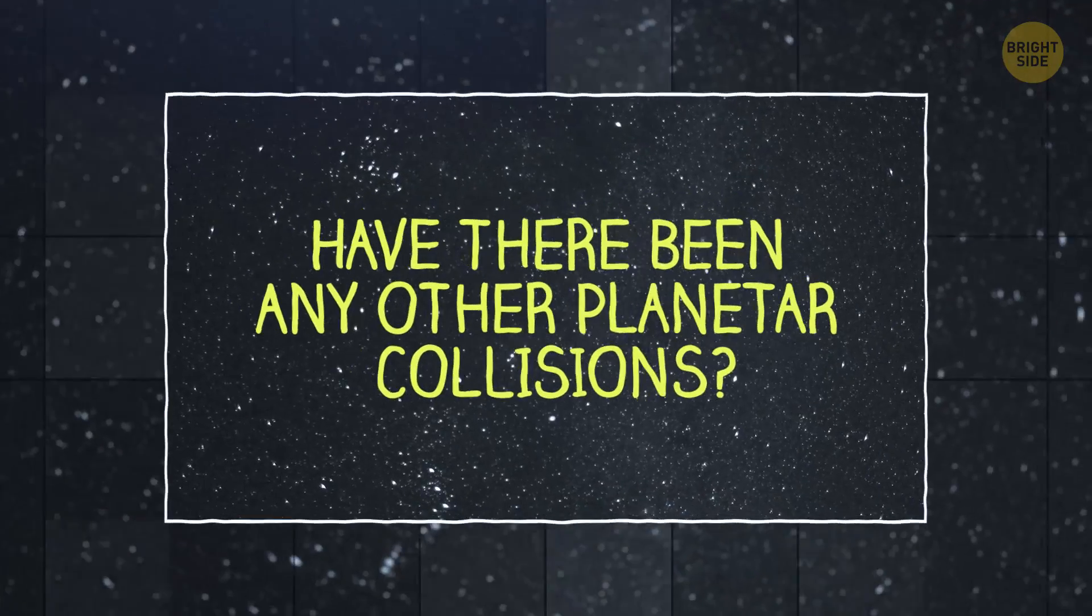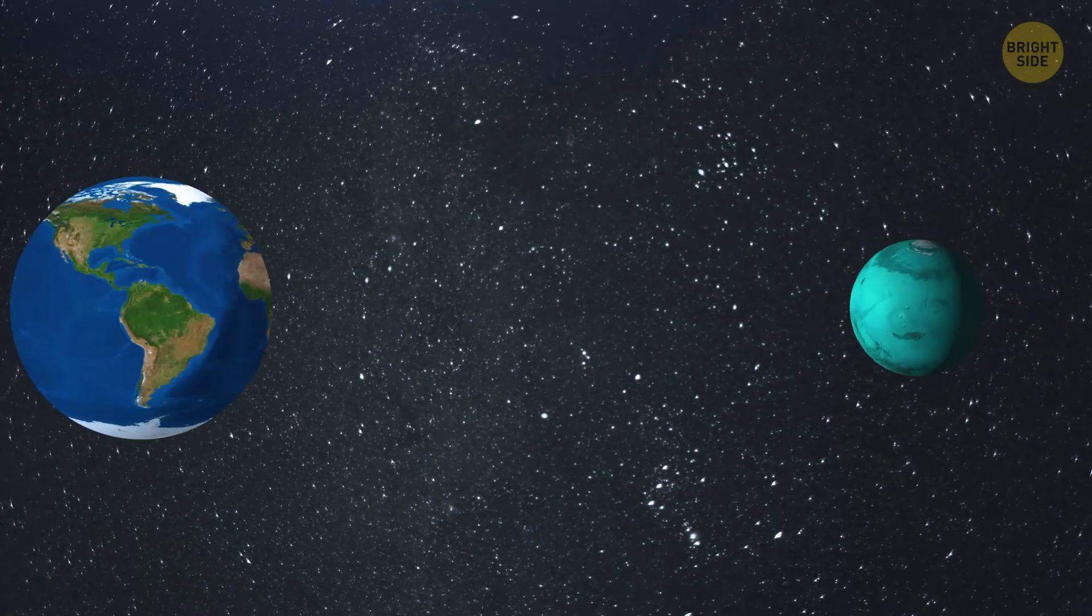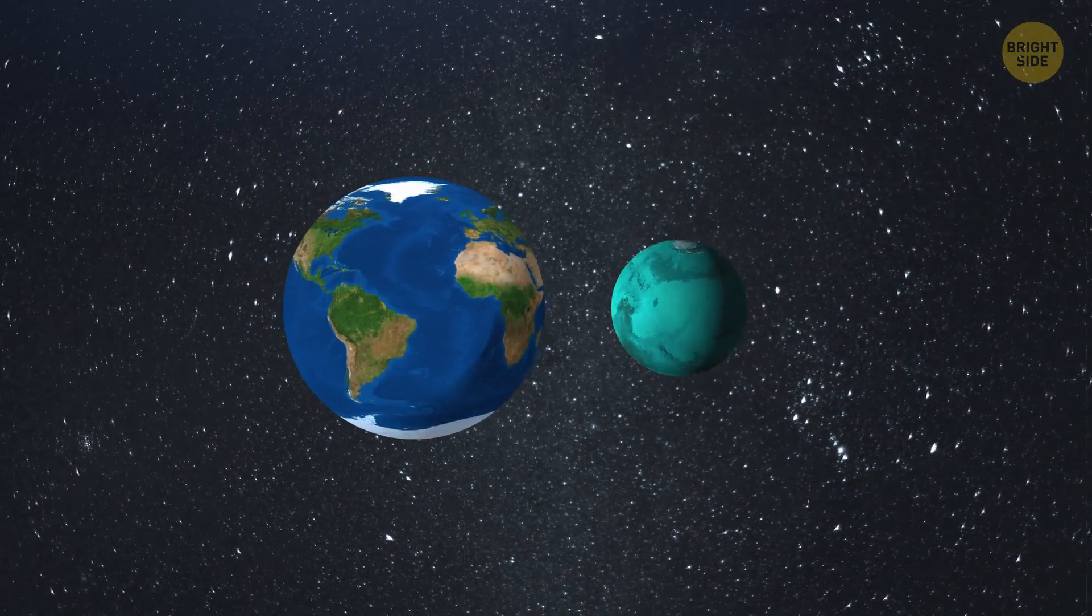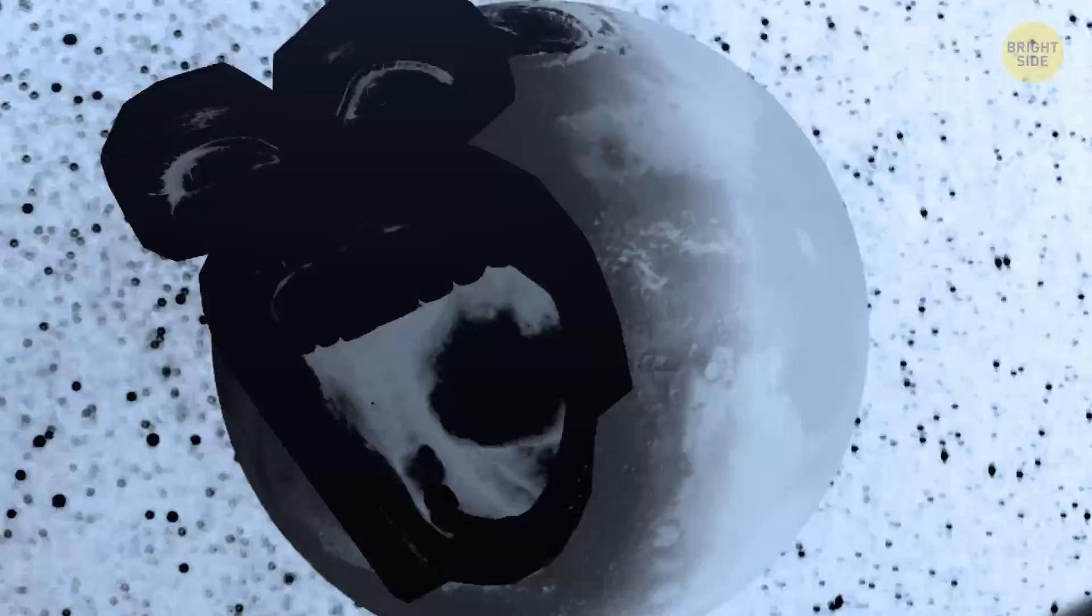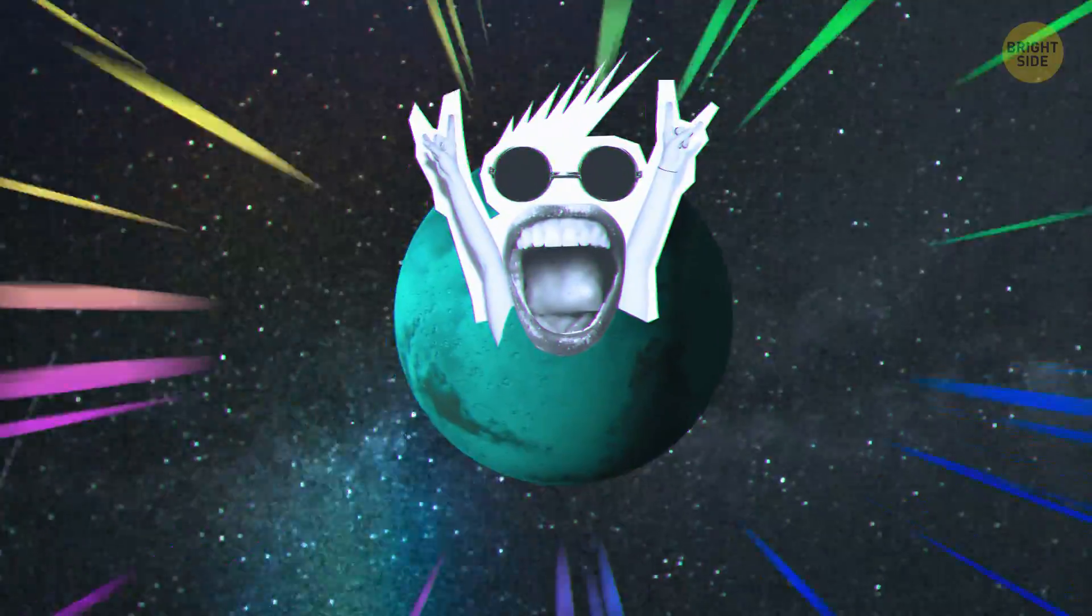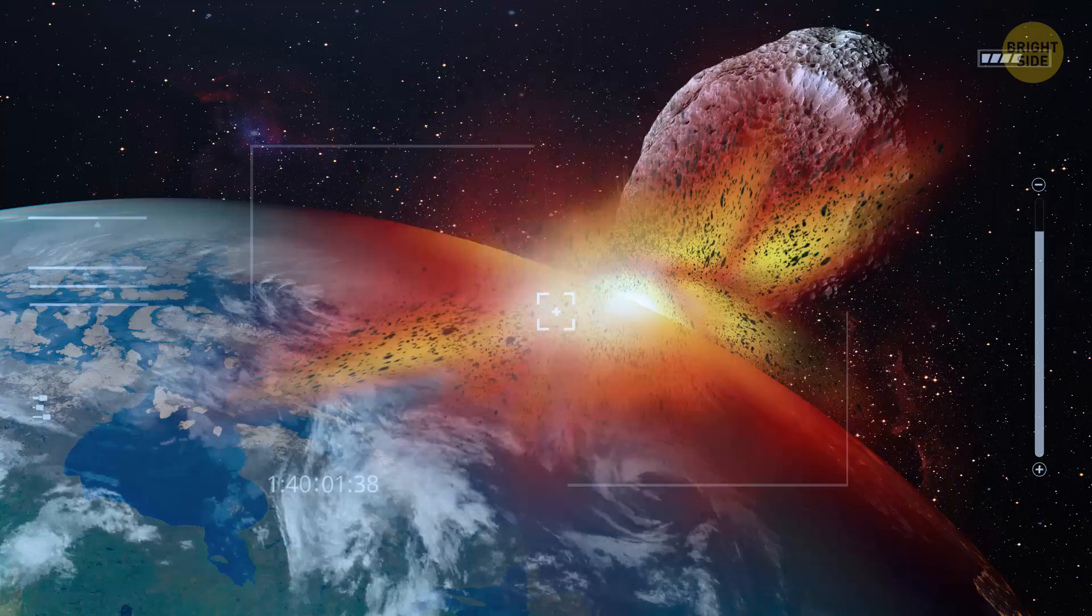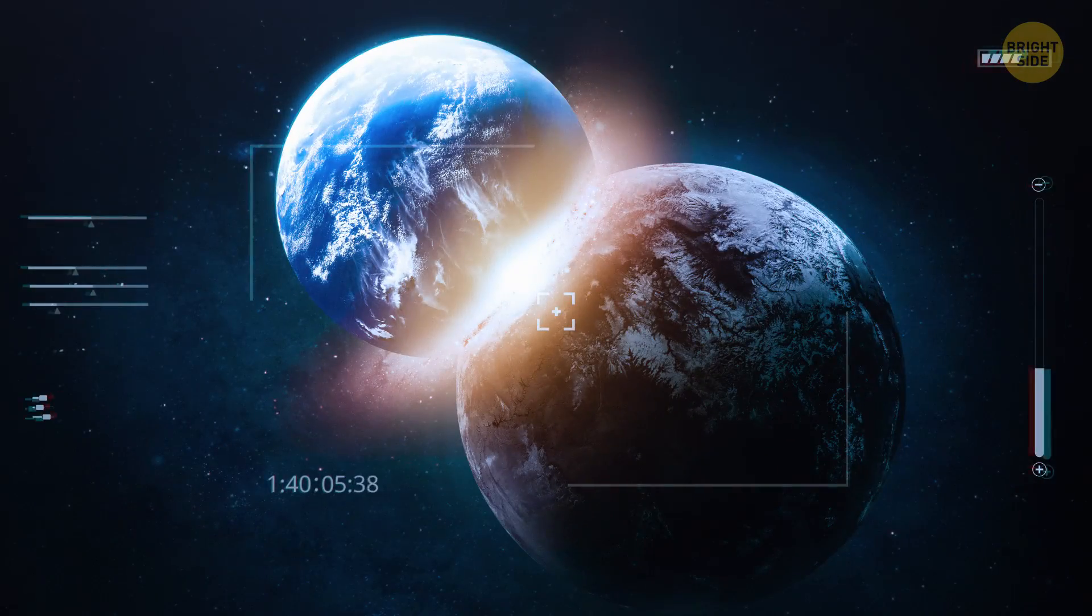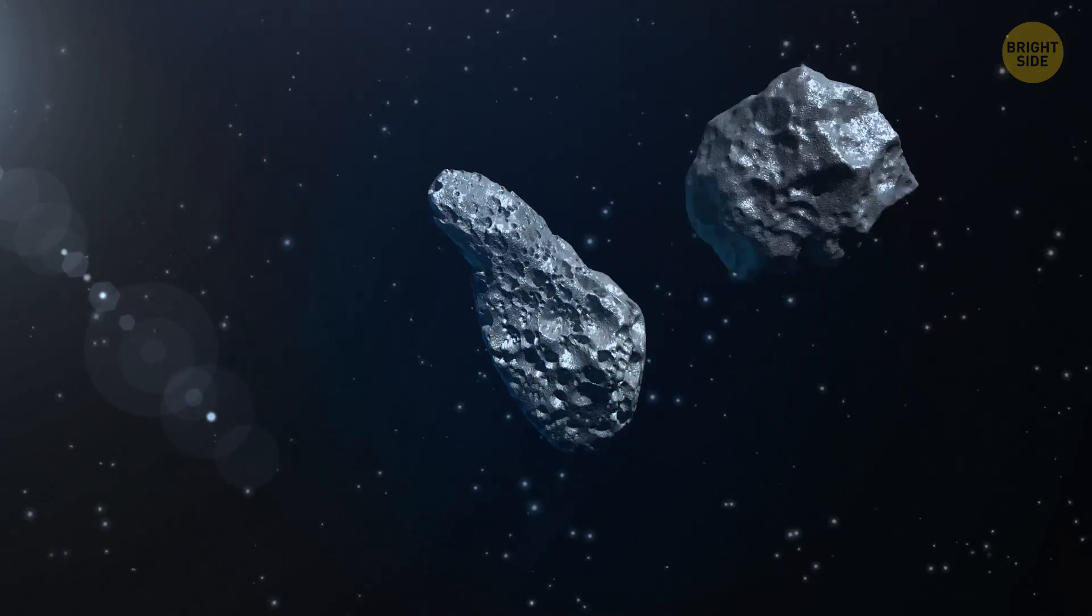Have there been other planetary collisions? Our Moon may have appeared 4.5 billion years ago, when the young Earth was hit by a planet about the size of Mars. Scientists call this lost world Theia. They used to think Theia only glanced the Earth. But some now say the two planets hit each other head-on. Theia instantly turned into lava and then merged with the Earth to become one big molten lump. The dust and material that flew up into space eventually created the Moon.